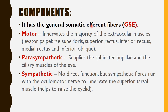The oculomotor nerve has two components: the general somatic efferent component and the autonomic component. The general somatic efferent component innervates the majority of the extraocular muscles within the orbit, including all the recti, the inferior oblique, and the levator palpebrae superioris.